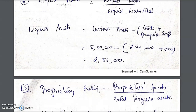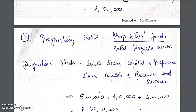The next ratio is the proprietary ratio, which is proprietary fund divided by total tangible assets. This sum has no intangible assets, so total assets of 16 lakh are taken directly as total tangible assets. In your balance sheet, if intangible assets like goodwill, patents, copyrights, or trademarks are given, remove their values and take only the tangible assets.